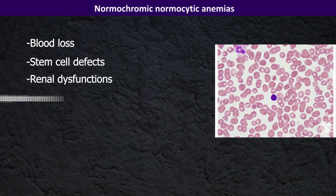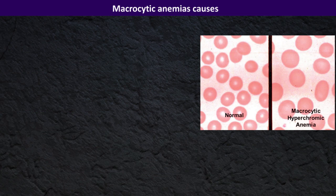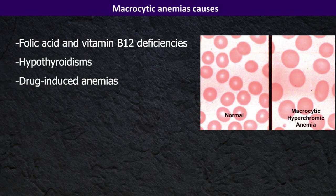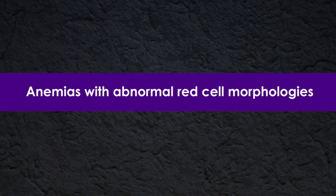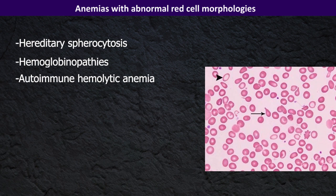Normochromic normocytic anemias include blood loss, stem cell defects, renal dysfunction, aplastic anemia, and anemia of some chronic diseases. Causes for macrocytic anemias include folic acid and vitamin B12 deficiencies, hyperthyroidism, and drug-induced anemias.